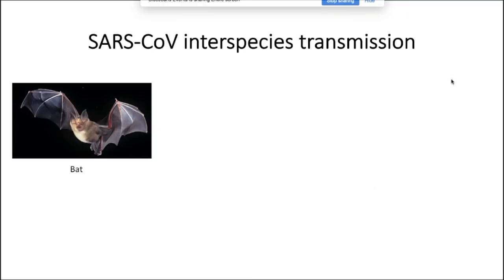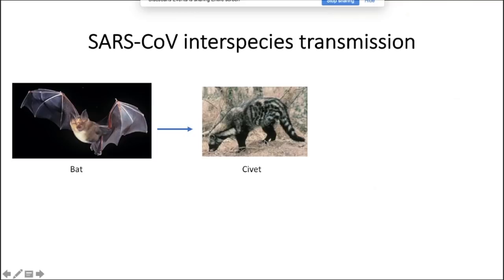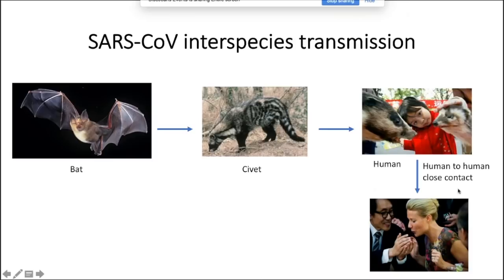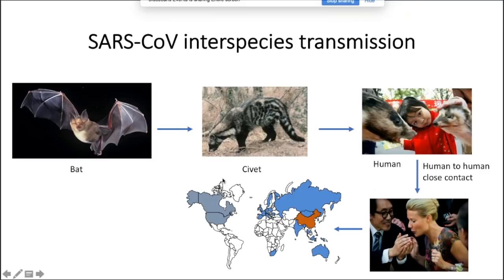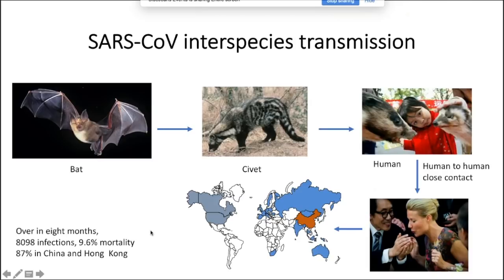I want to talk about SARS coronavirus interspecies transmission across the three coronavirus epidemics. SARS had its origins in a bat, was transmitted to a civet, then to a human, and spread to many humans through human-to-human close contact, concentrated in Asia. It was over in eight months, with about 8,000 infections and roughly 10% mortality. About 87% of infections were in China and Hong Kong, and it barely touched North America except for a fair number of cases in Toronto. We really don't know how many times this cross-species jump happened.